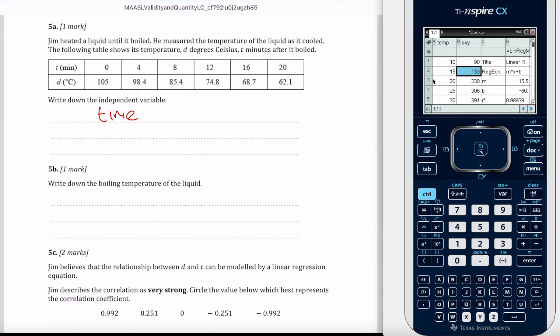Write down the boiling temperature of the liquid. That's when T equals 0, so T is 0, and that's 105 degrees centigrade. You don't have to include units, but let's think about communication.